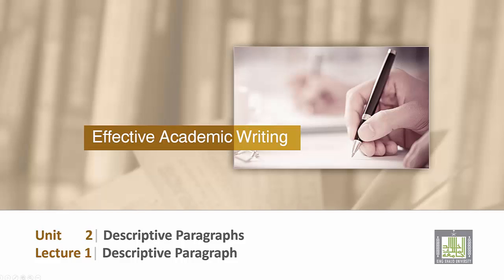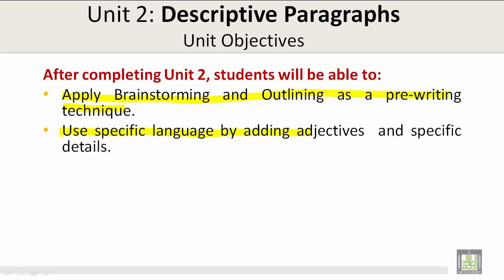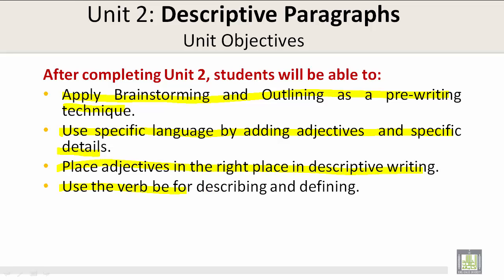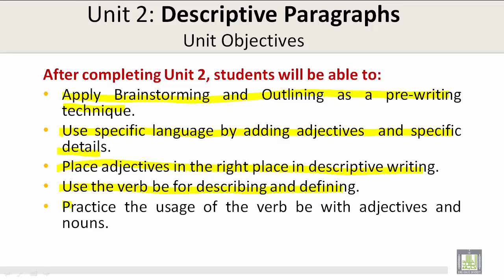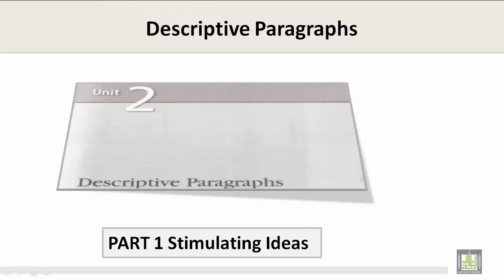Unit Objectives. After completing Unit 2, students will be able to apply brainstorming and outlining as pre-writing techniques, use specific language by adding adjectives and specific details, place adjectives in the right place in descriptive writing, use the verb 'be' for describing and defining, and practice the usage of the verb 'be' with adjectives and nouns. Also, edit a paragraph for style and grammar mistakes.